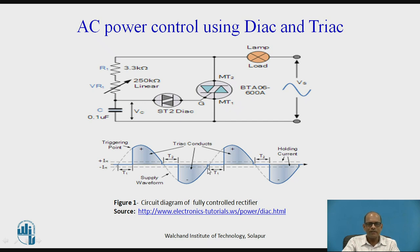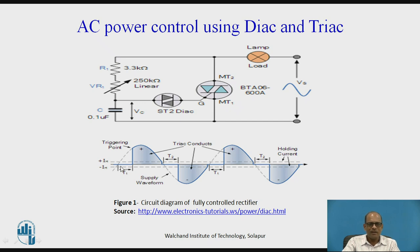At this point, TRIAC becomes OFF and the next cycle starts. This completes one cycle of the output, that is the load voltage, consisting of a positive half cycle and a negative half cycle. By observing the waveforms of the load voltage, the firing angle is varied. This firing angle is varied by varying VR1. By varying the firing angle, we can control the load voltage and thereby control the load power.